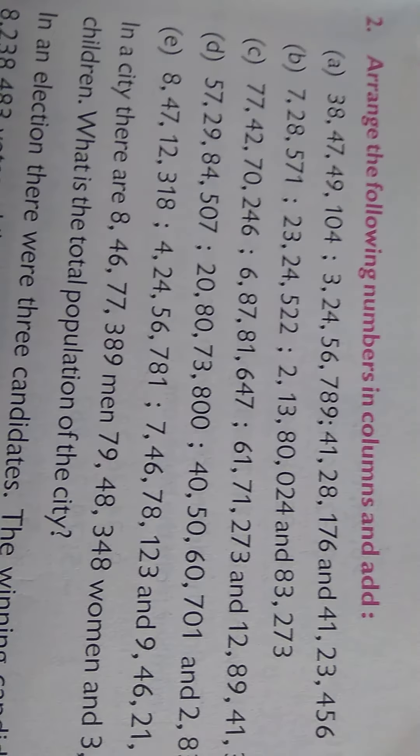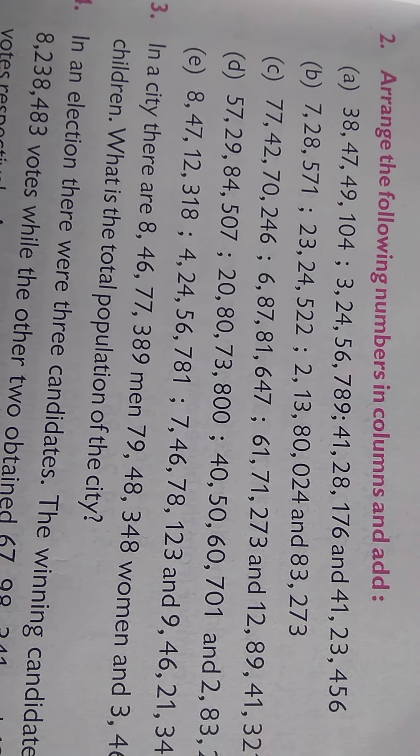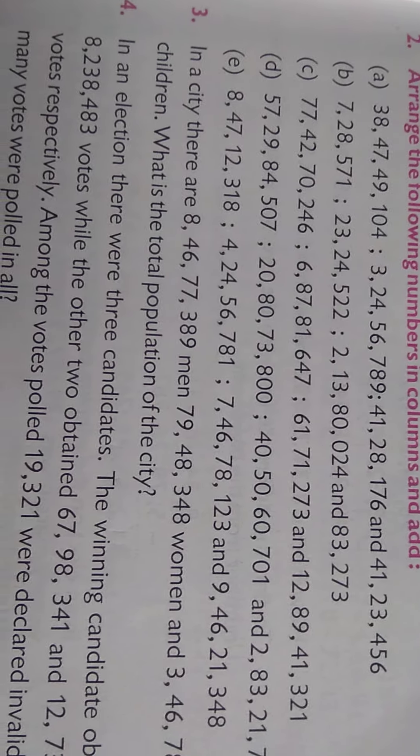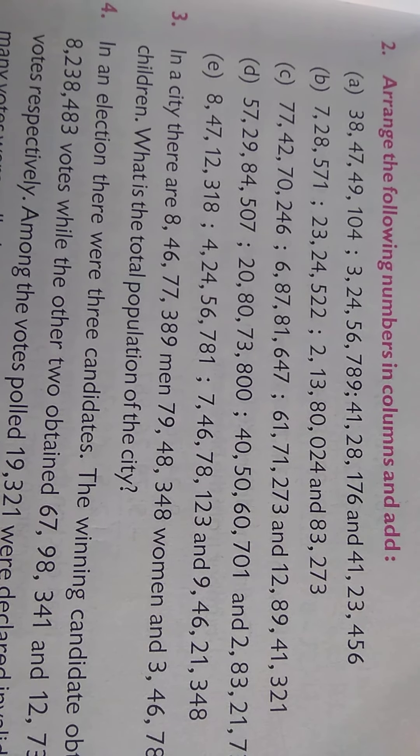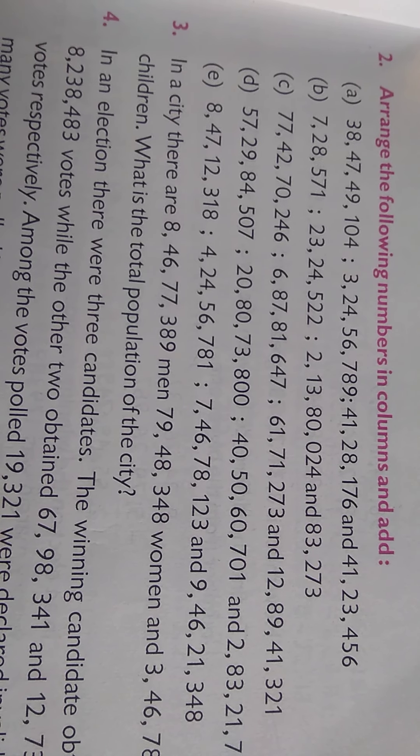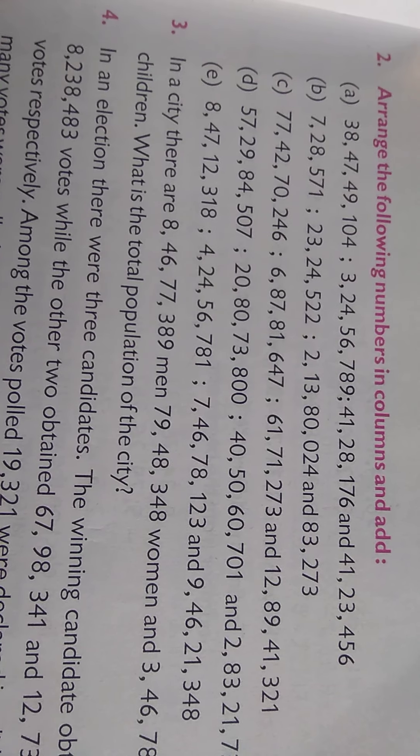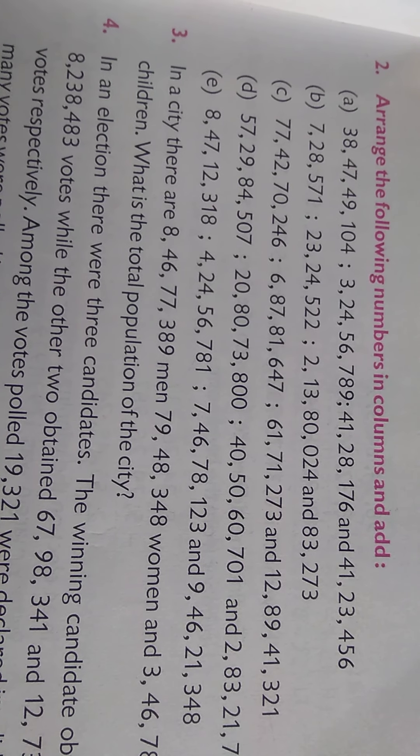Question number 2nd is arrange the following numbers in columns and add. In the first question they have already written in the form of column. Just we have to find out the addition. In this question first of all we will arrange the terms in column then we will find out the addition.